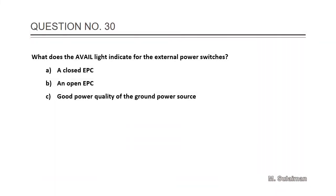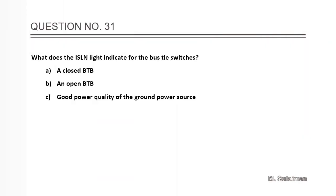Question number 30: What does the available light indicate for the external power switches? Answer is C. Question 31: What does the ISLN light indicate for the bus tie switches? The answer is B: an open BTB.